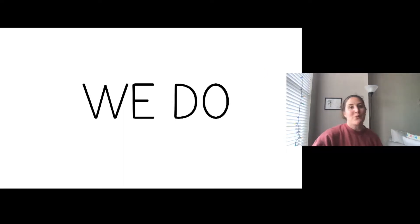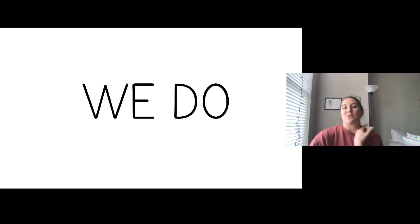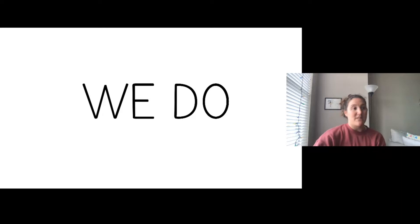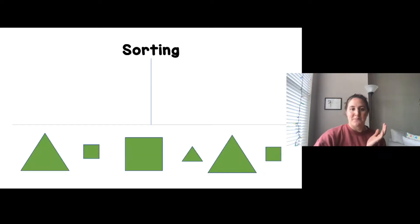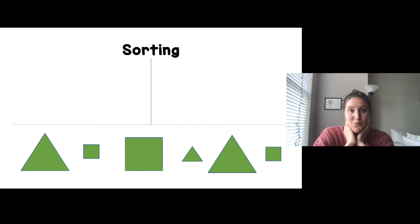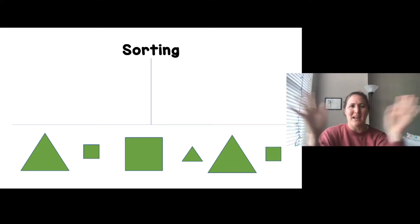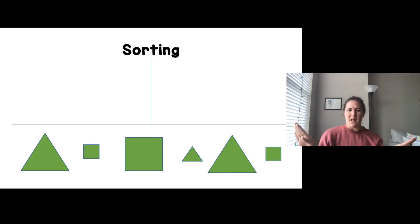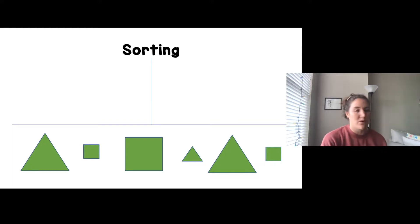Now we're going to look at them together and think about how we can sort them. Can we sort by size — big and small? Can we sort by different colors, like yellow and green? Or can we sort by shape, like triangles and circles? I see a lot of green shapes, so can we sort by color? If they're all green, we can't put them into two groups by color — we'd need two different colors. So we can't sort by color.